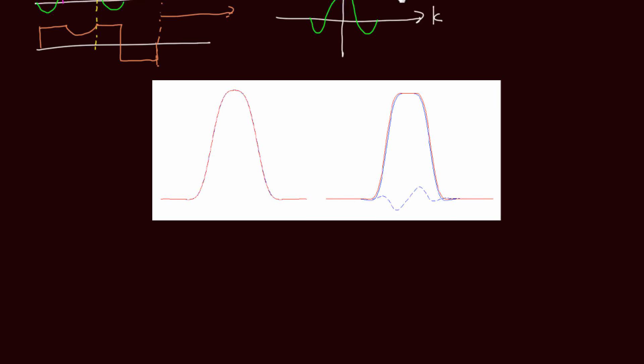And finally, a quick look at how well the small tip angle approximation holds for larger flip angles. For flip angles up to around 30 degrees, the small tip angle approximation is nearly perfect. Here the red line shows the Fourier transform of the pulse, while the blue line shows the full Bloch equation simulation.